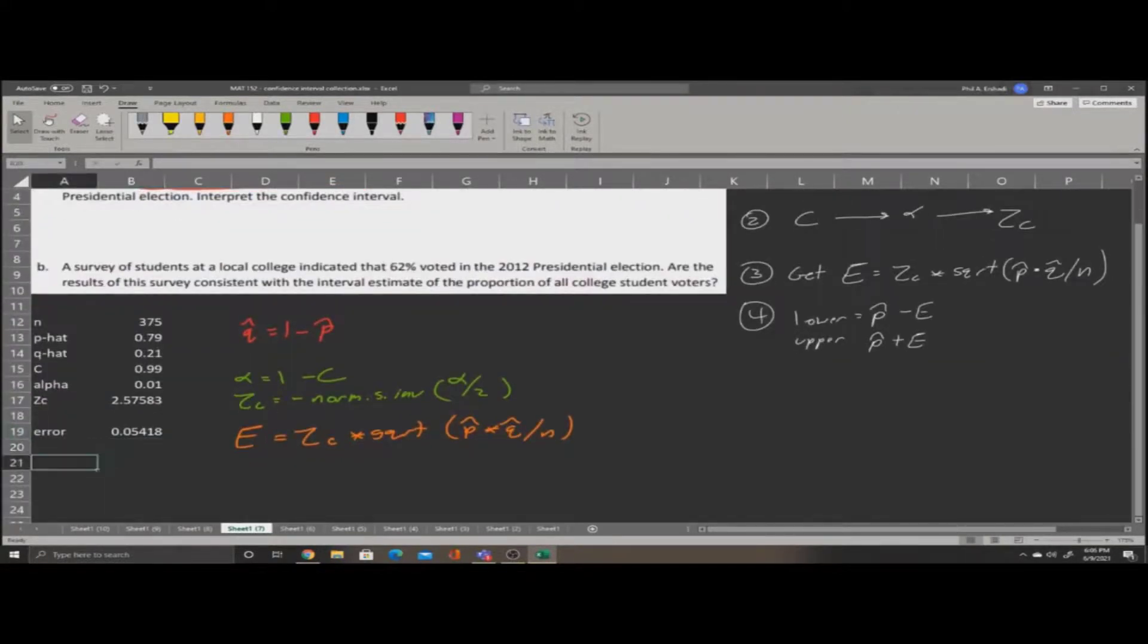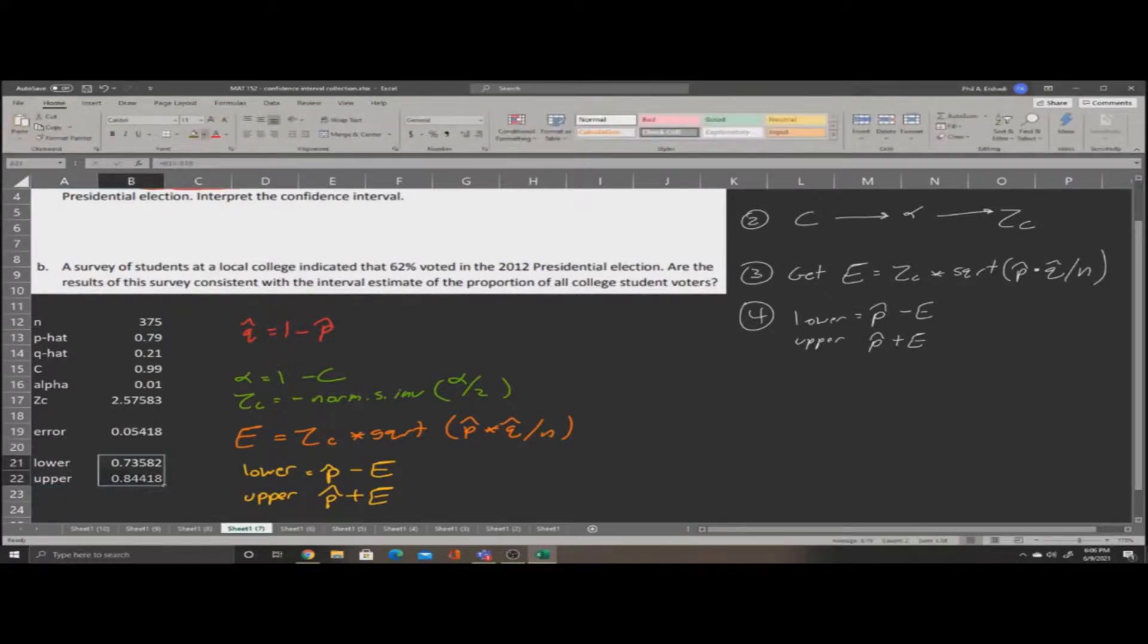Now, our lower boundary will be p-hat minus the error. And our upper boundary will be p-hat plus the error. So, here we'll say equals p-hat subtract error. And for our upper boundary, equals p-hat plus error. These two numbers will be our confidence interval.